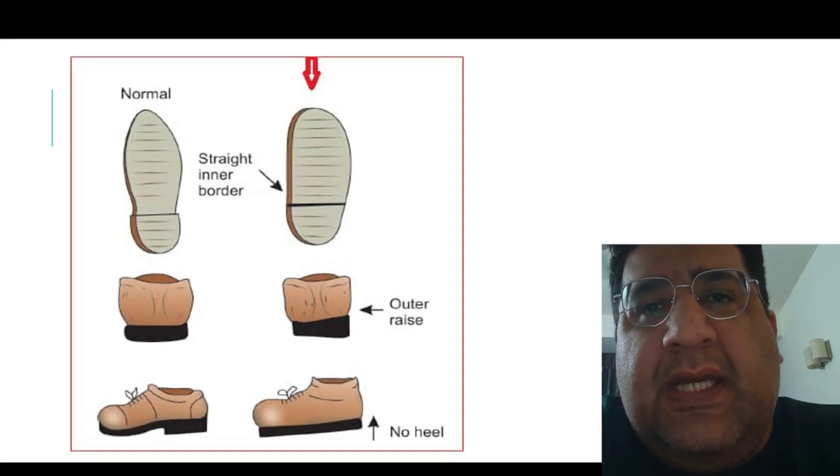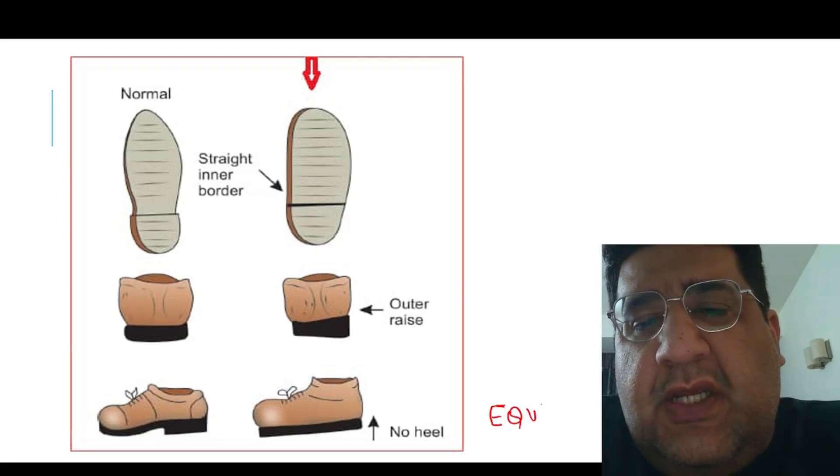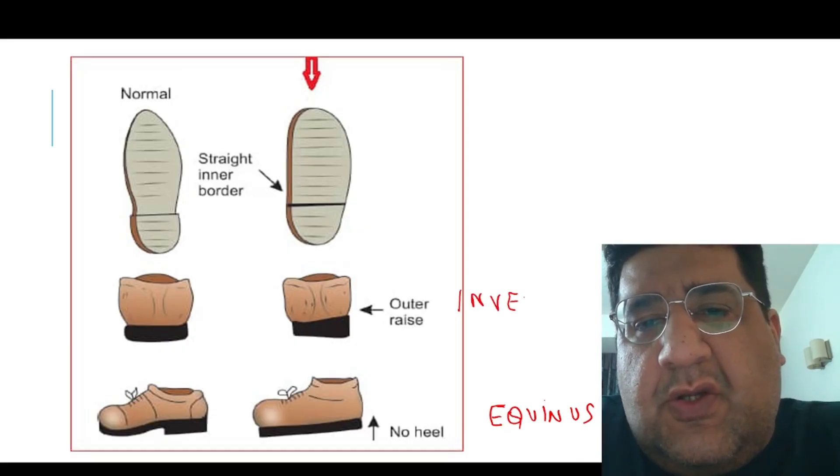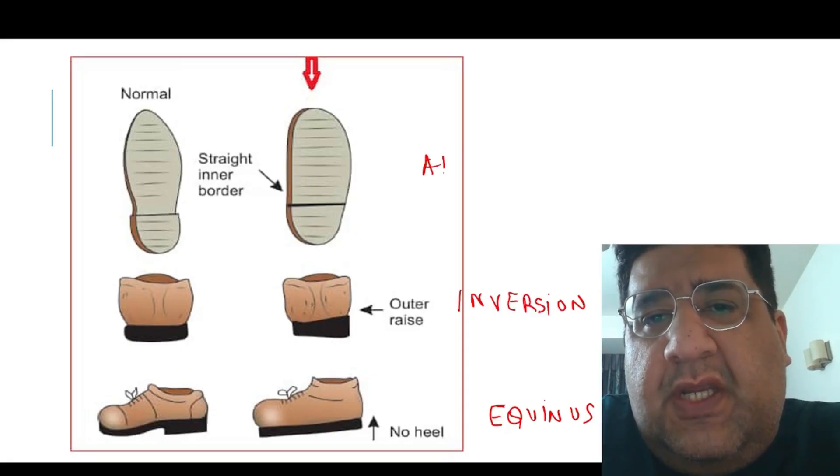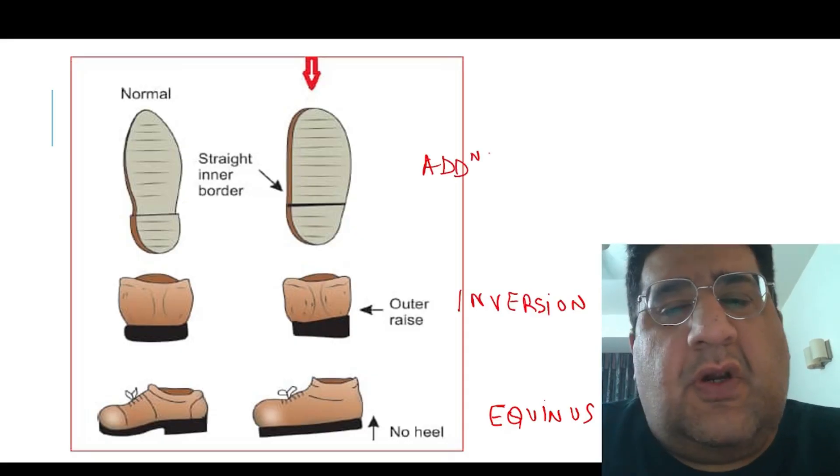In CTEV, we struggle with a deformity called equinus. We struggle with a deformity called inversion. We struggle with a deformity called adduction.